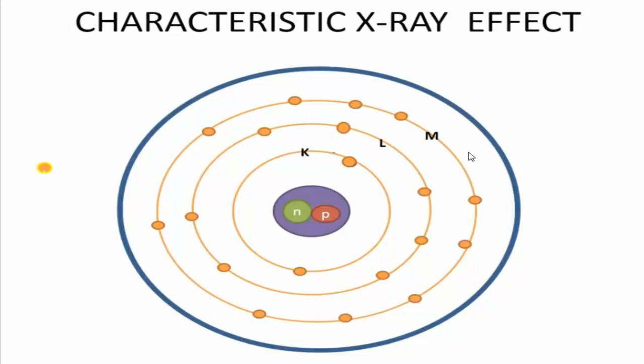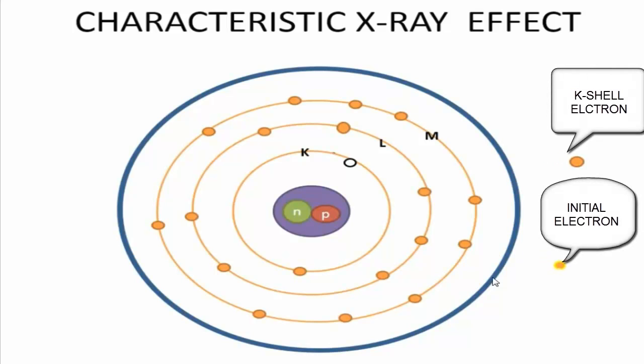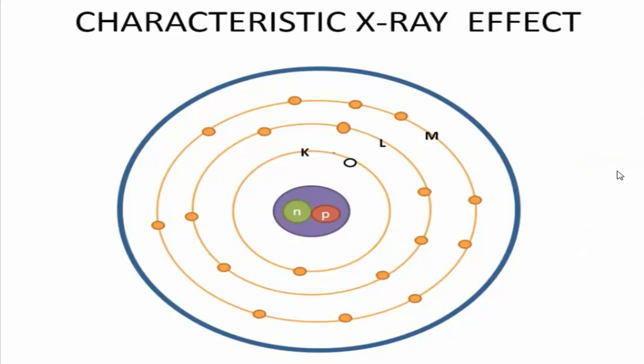In the characteristic X-ray effect, when a high-speed electron strikes any orbital electron, that orbital electron will be ejected out. The incident electron will also deviate from its original direction after the collision occurs.